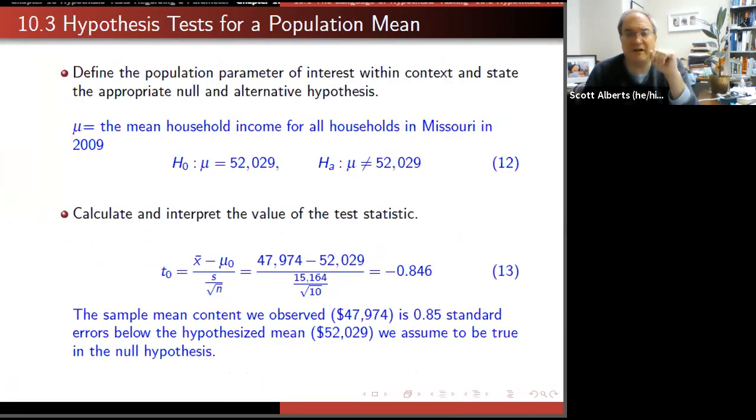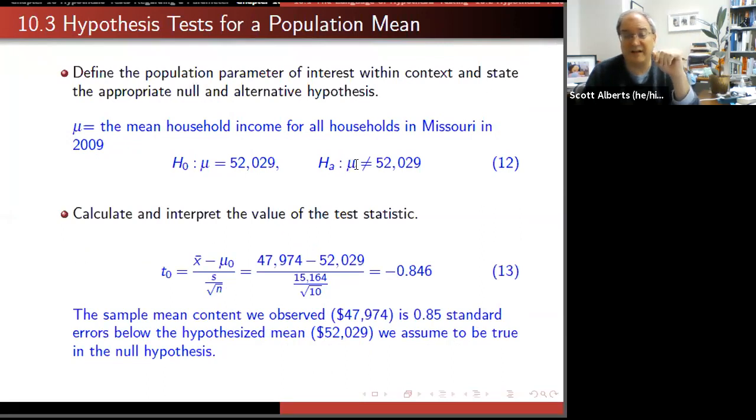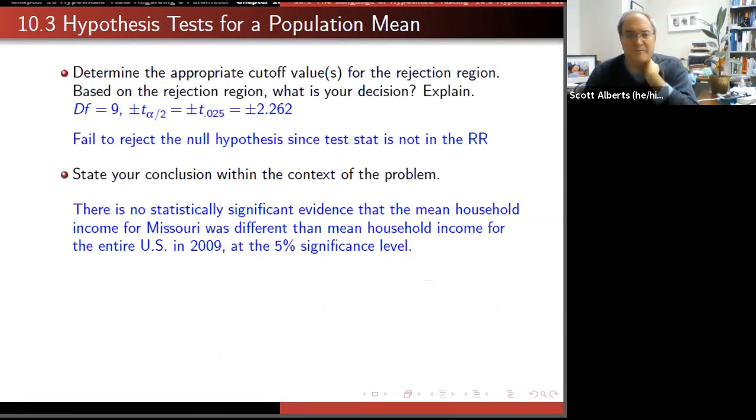We define our null hypothesis - the mean is the national average, $52,029. Because we didn't have a direction in our hypothesis, that's a not equal to, so that's a two-sided hypothesis. Remember confidence intervals are always two-sided. Hypothesis tests though could just look in one direction. We use our formula: $47,974 minus $52,000 divided by $15,000 divided by square root of 10. That gives us a t-score of minus 0.846. Remember we expect 2 to be about where it's going to be interesting, so 0.85 is not as much, so that makes us think there's probably not a very big difference. We use the computer and find that there's such not a difference that we can't even find it on the table.